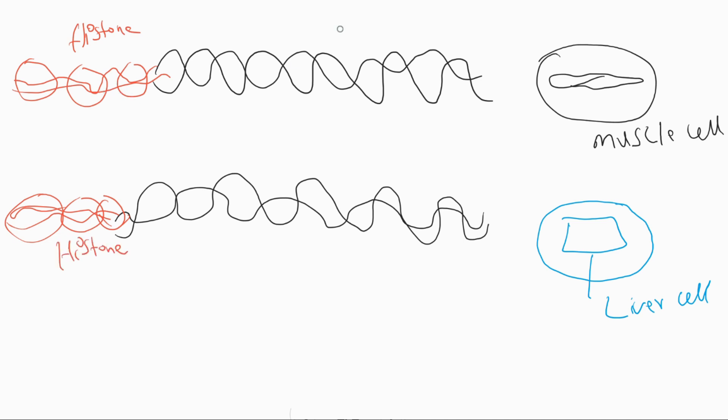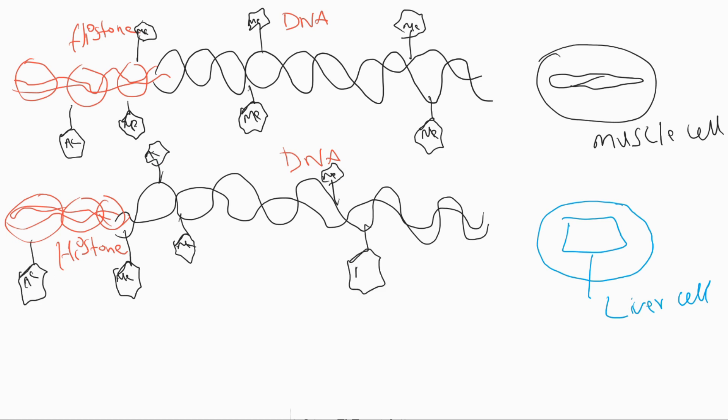The modification in DNA and histone results in changed gene expression. When chemical tags or chemical markers are added into DNA or in the histone, it causes changes in the expression of genes.